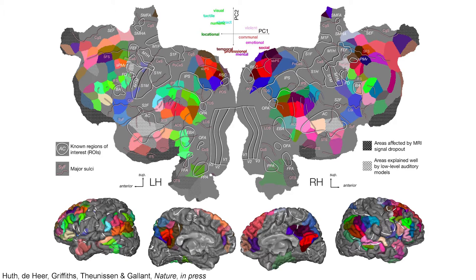If we collect data from a group of say 7 or 10 subjects, we can use modern machine learning and generative modeling methods to recover an atlas of semantic selectivity. This atlas shows that there are about 200 distinct brain areas involved in representing the meaning of language. These areas are shared across all humans, but their exact position and size differs in different individuals.